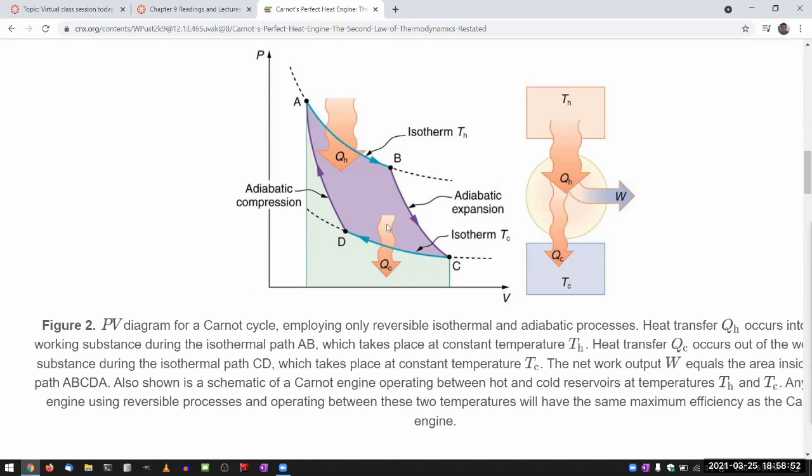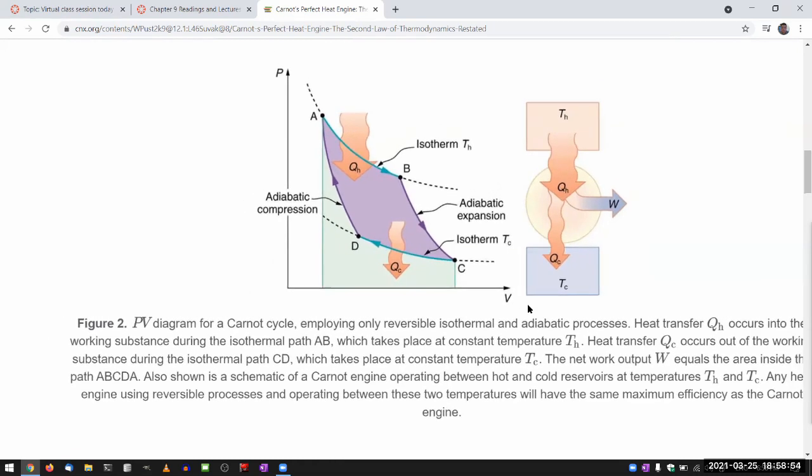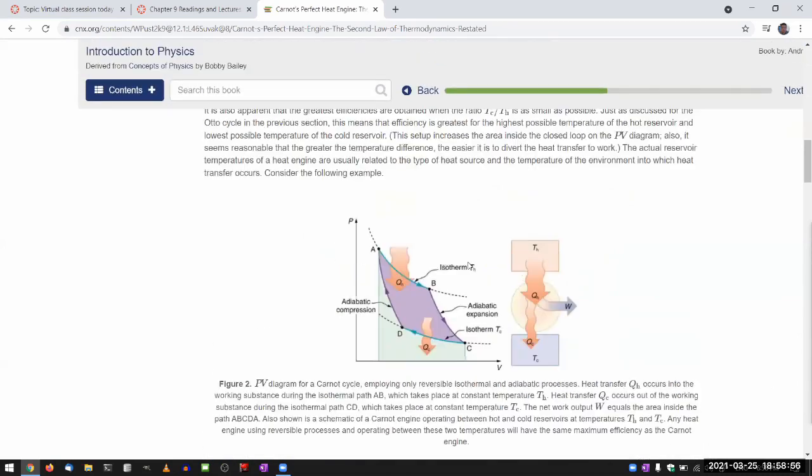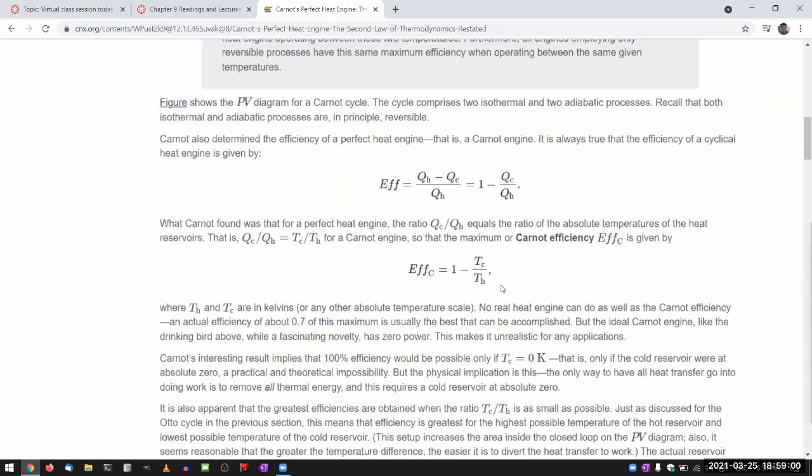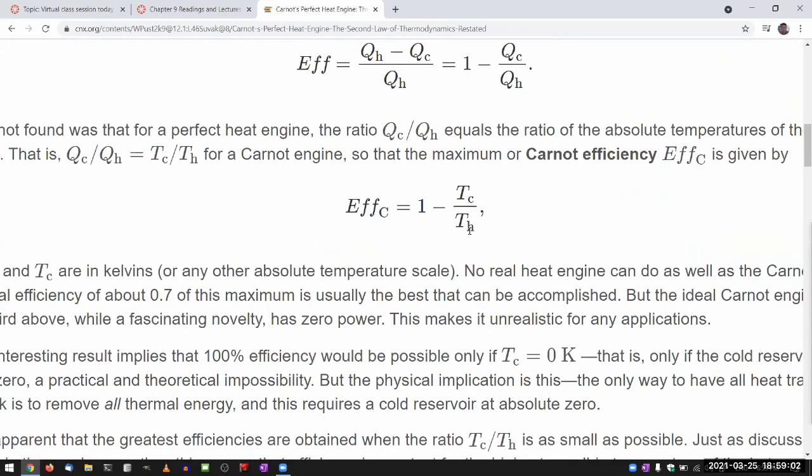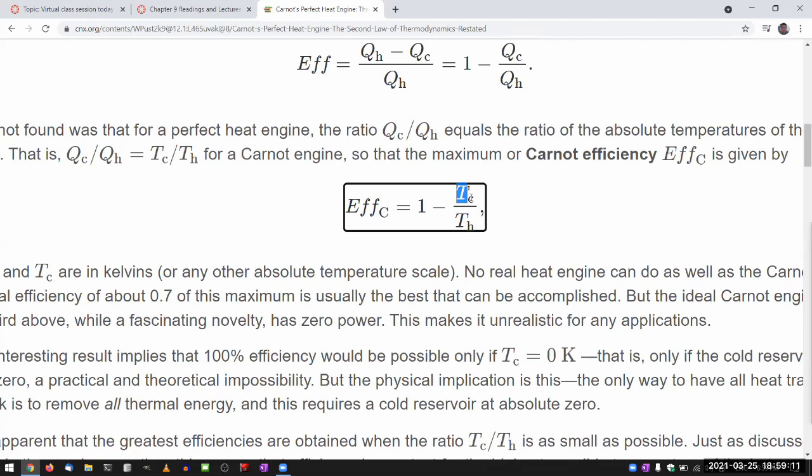So when you take this into consideration and go through the calculation, this is the Carnot efficiency that you end at. And these temperatures have to be in Kelvin temperature, absolute zero scale. And when you think of the typical engine operating conditions, like the cold temperature, let's say you keep it ice cold, that means the cold temperature is 273 Kelvin.